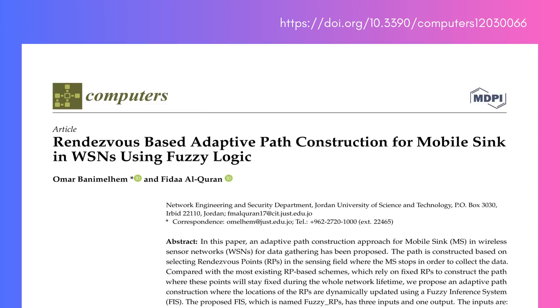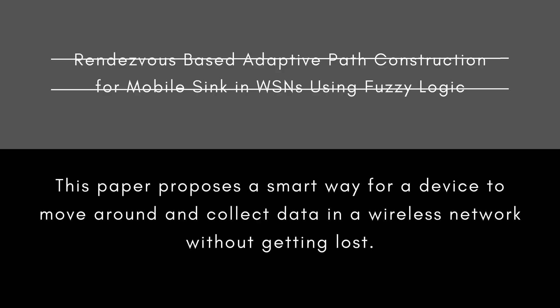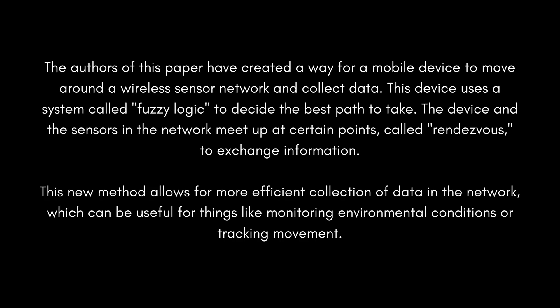Let's start by translating the title into more accessible language. In very simple terms, this paper proposes a smart way for a device to move around and collect data in a wireless network without getting lost. The authors have created a way for a mobile device to move around a wireless sensor network and collect data, using a system called fuzzy logic to decide the best path to take. The device and the sensors meet up at certain points, called rendezvous, to exchange information. This new method allows for more efficient data collection, useful for things like monitoring environmental conditions or tracking movement.